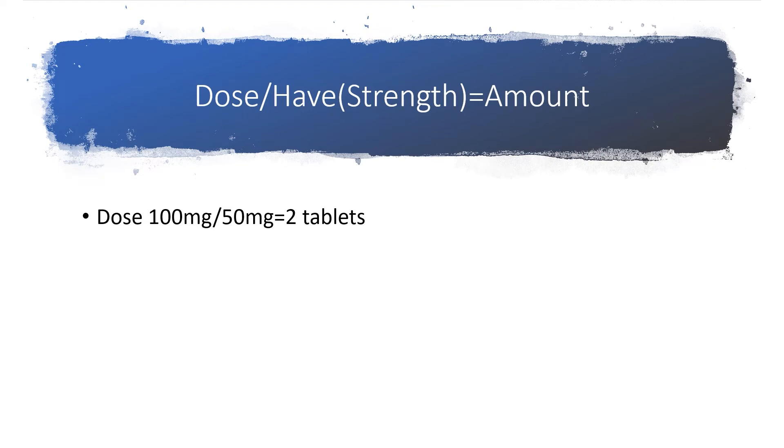100 milligrams divided by 50 milligrams equals two. So dose divided by H, so it's D divided by H. Now H is what you have. That's what pharmacy sent you. Whatever word you want to use, whoever came up with the formula just used H have. Okay, so what you have, remember, is the strength. You have the strength that pharmacy sent you will equal the amount.